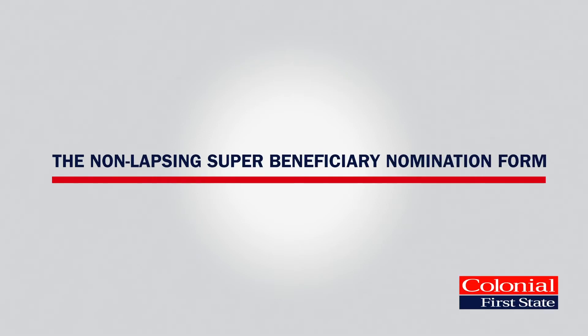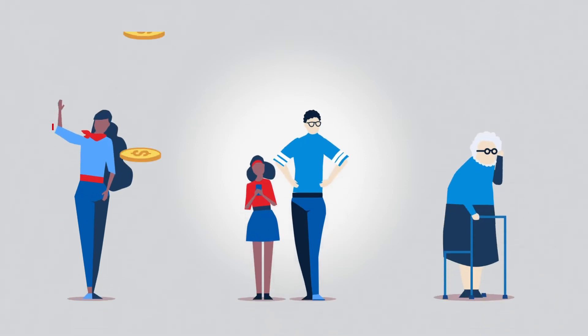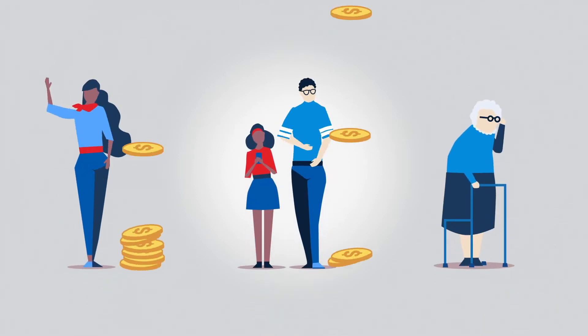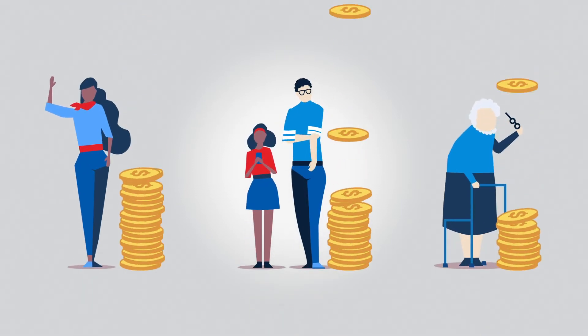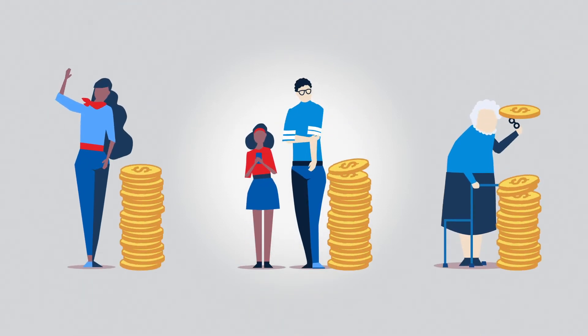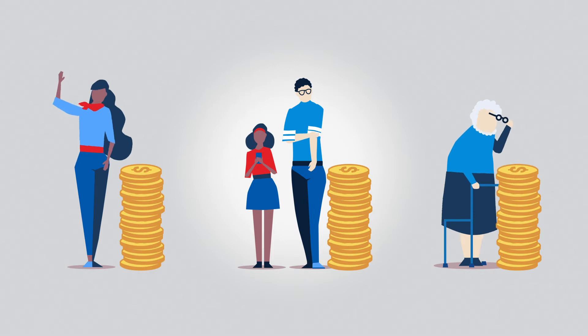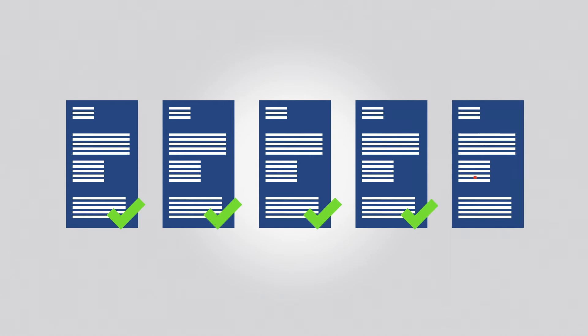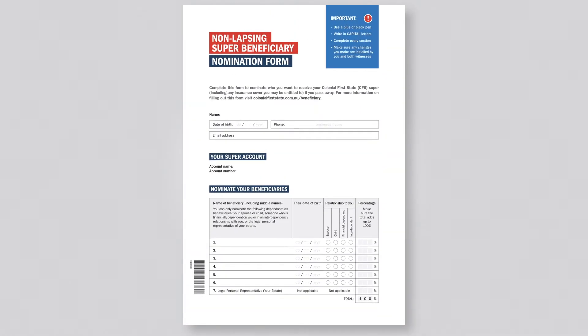Welcome to our guide on filling out the Non-Lapsing Super Beneficiary Nomination Form. By submitting this form, you will have more certainty that your money will go to the person or people you had in mind. Unfortunately, around one in five forms sent to us are invalid due to minor errors, so to help, we've prepared this video to walk you through completing the form.